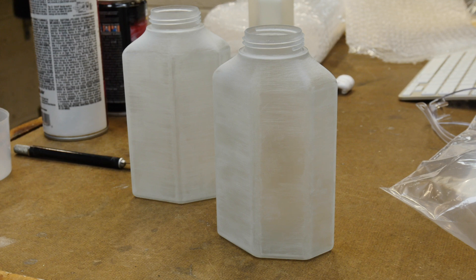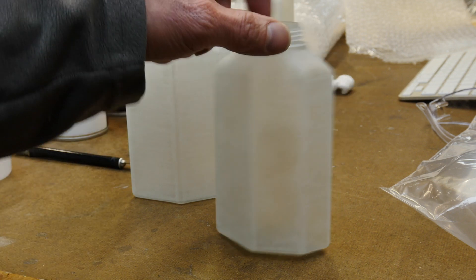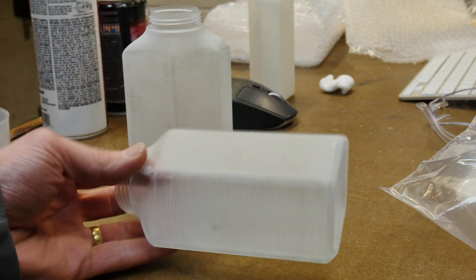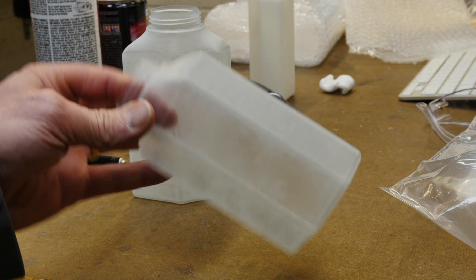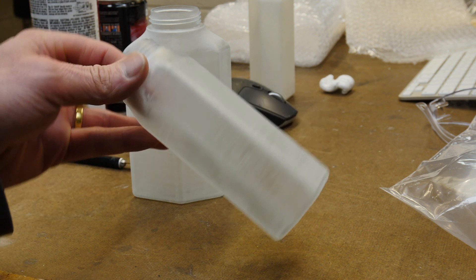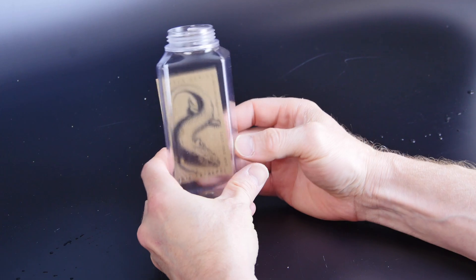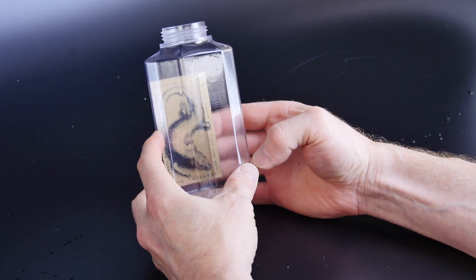This is a 3D printed prototype of a bottle that I designed. It's an SLA part, one millimeter thick, and this is what you get from a major North American service bureau. It's translucent at best. I'm going to show you how to make it transparent so that you can read through it.